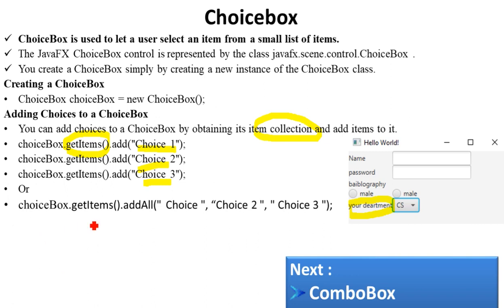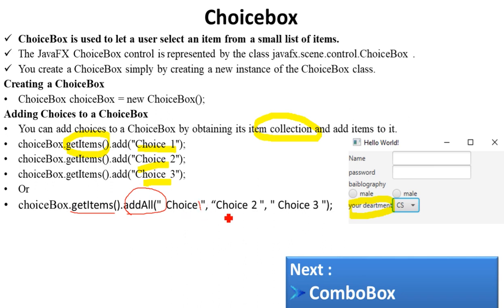Using the getItems() method followed by addAll(), you can add choices separately. For example: choice one, choice two, and so on — each added as individual items to the ChooseBox.